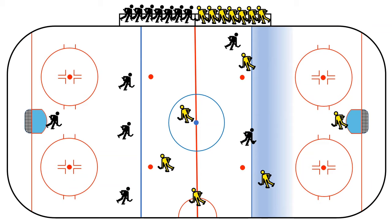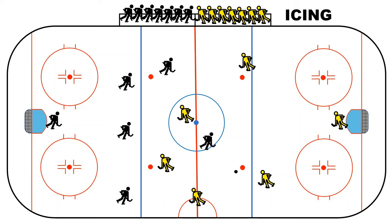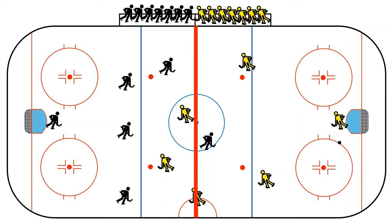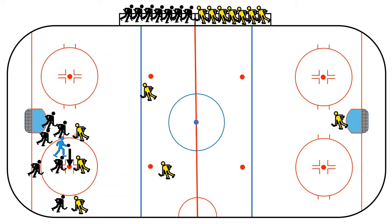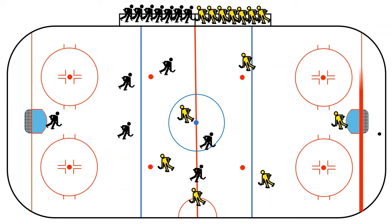Another rule to learn is icing. Icing occurs when you hit the puck and it crosses two red lines — the red line at the center and the red line closer to your opponent's goal post. That is icing and it's not allowed. In that case a face-off happens near your own goal post. If icing happens on the top half of the rink, the face-off is at the top half; if it's the bottom half, it's at the bottom half. If the puck only crosses one red line, it is fine and the game continues.